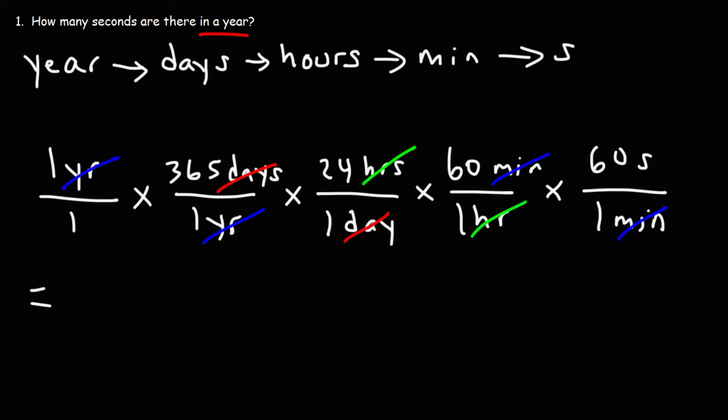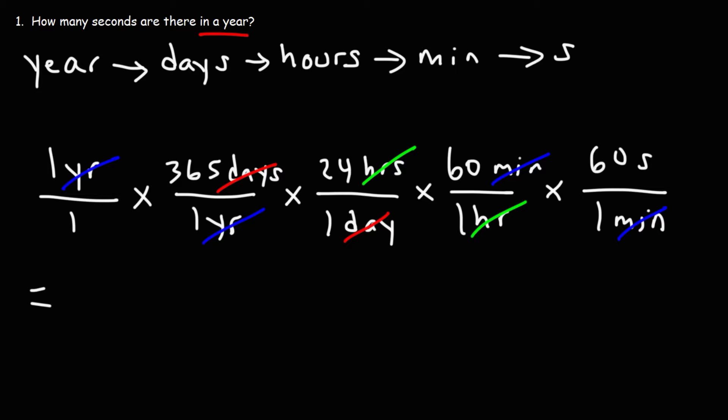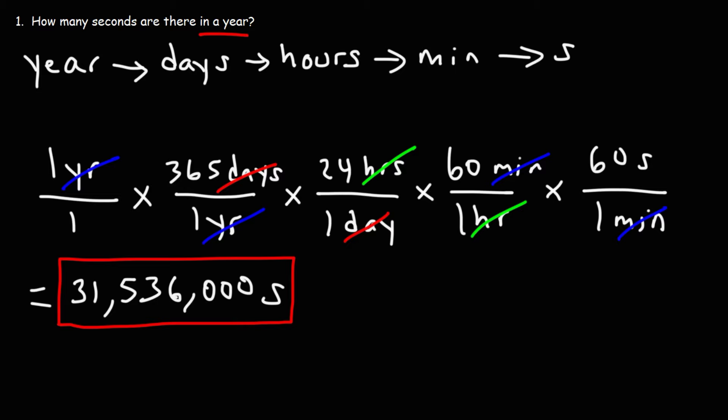That's the only unit we should have at the end of this problem. To get the answer, we multiply all of the numbers on the numerators of the fractions: 1 times 365 times 24 times 60 times 60. The answer is 31,536,000 seconds — that's how many seconds there are in a year defined as 365 days. If you choose 365.25, your answer will be 31,557,600 seconds.